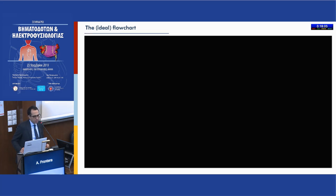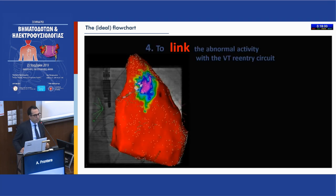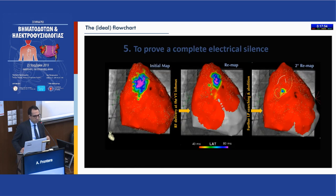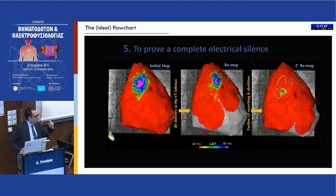You place your ablation catheter on this area and in 10 seconds you interrupt the VT circuit and have sinus rhythm restoration. Then you want to link the abnormal activity you have recorded with the VT reentry circuits, because you want to establish an endpoint. The endpoint is to have complete electrical silence.